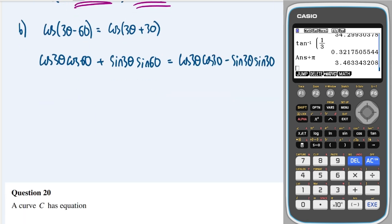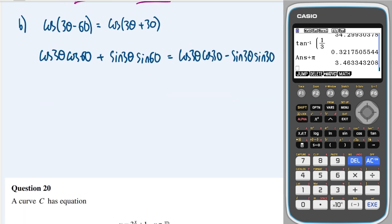Okay, great. Next, let's use the exact values that we know. So we know that cos60 is a half. We know that sin60 is √3 over 2.